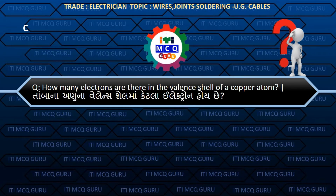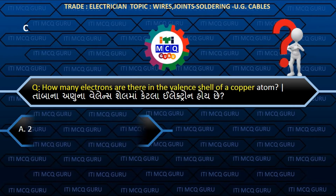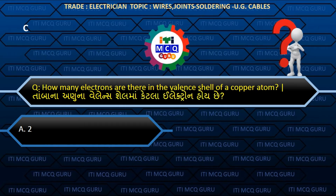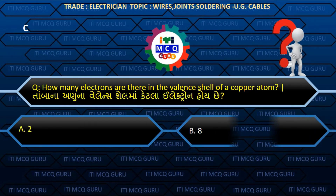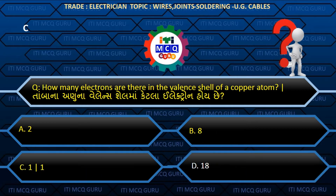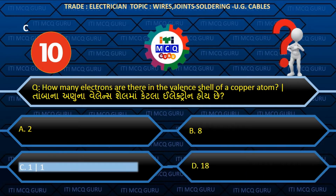How many electrons are there in the valence shell of a copper atom? Answer: 1.